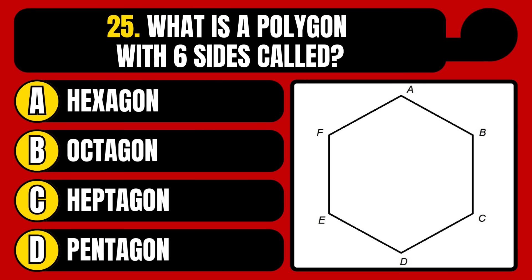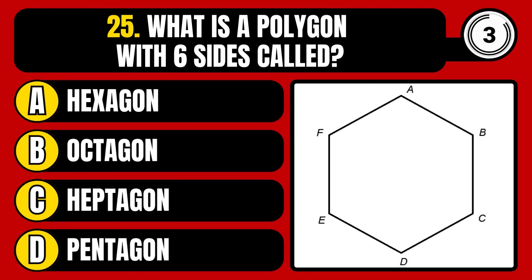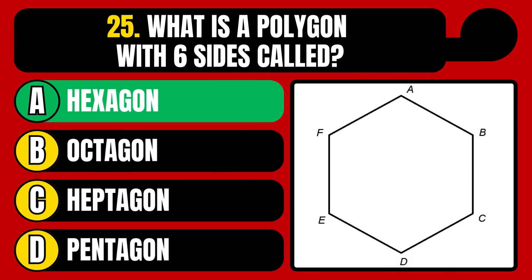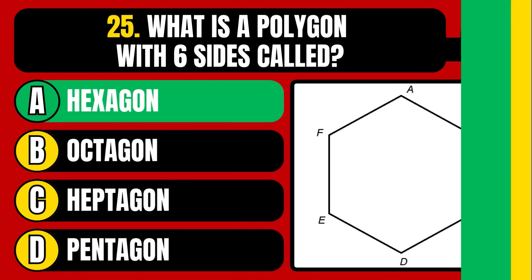What is a polygon with six sides called? Hexagon, octagon, heptagon, or pentagon? The correct answer is option A, hexagon.